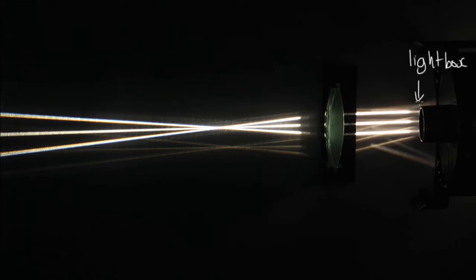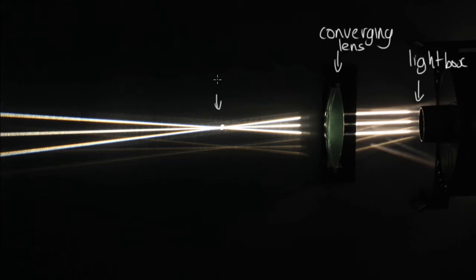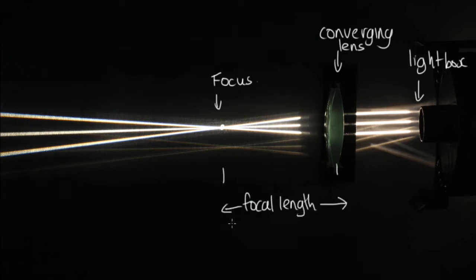Let's have a look at what happens when we shine parallel light beams onto a converging lens. Here is a photograph taken from on top, showing parallel rays emerging from a light box. These rays come towards a converging lens, at which point they are refracted, and you can see that they all cross each other at a point. This point is called the focus, and the distance between the focus and the lens is called the focal length.